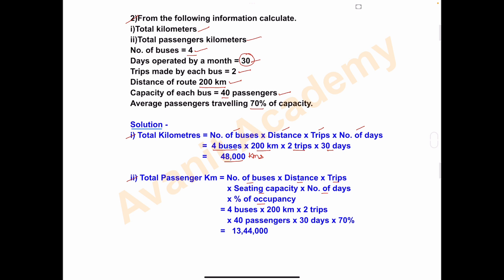Number of buses: 4. Distance: 200 kilometers. Trips: 2. Seating capacity — in each bus, 40 passengers can sit, so 40 passengers. Number of days: this bus is operated for 30 days. Percentage of occupancy: the bus is not 100 percent occupied, it is just 70 percent occupied, 30 percent is empty. So take 70 percent. Calculating: 4 × 200 × 2 × 40 × 30 × 70%, and you will get 13,44,000.